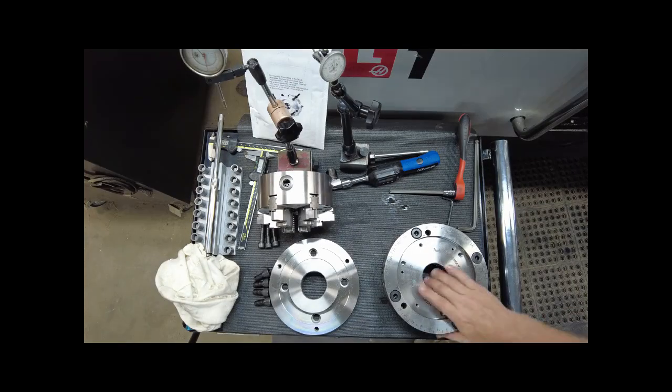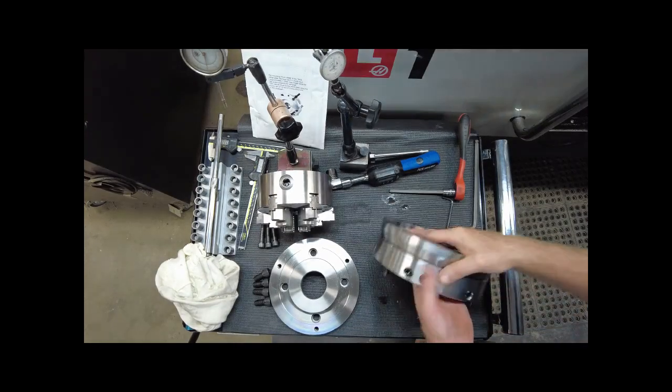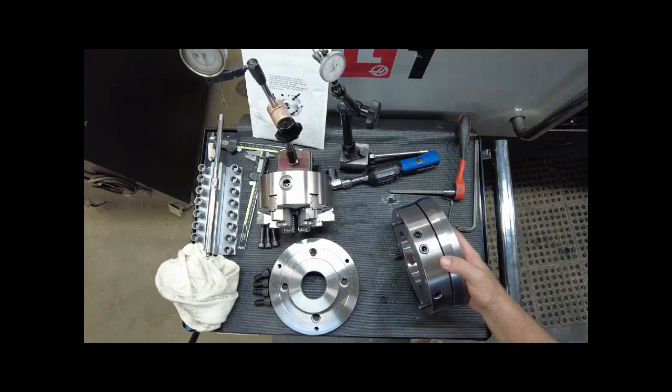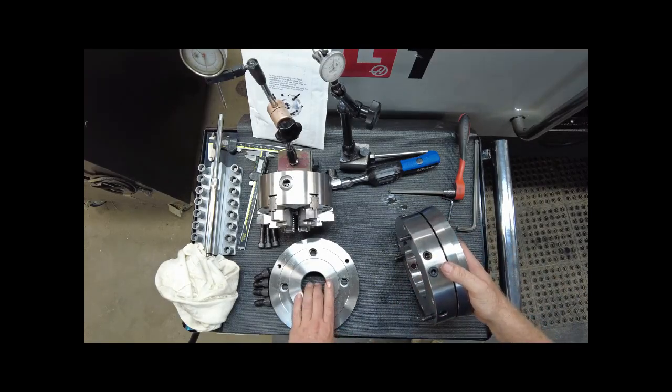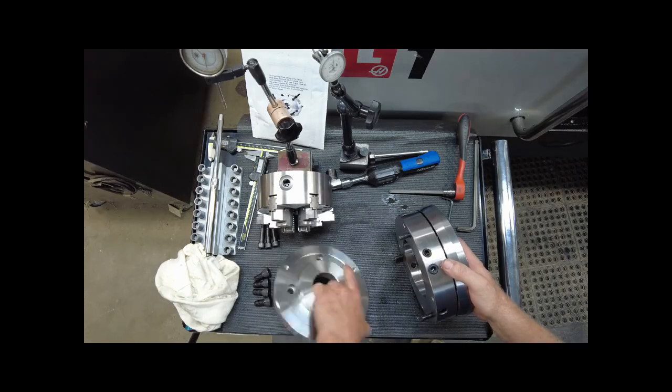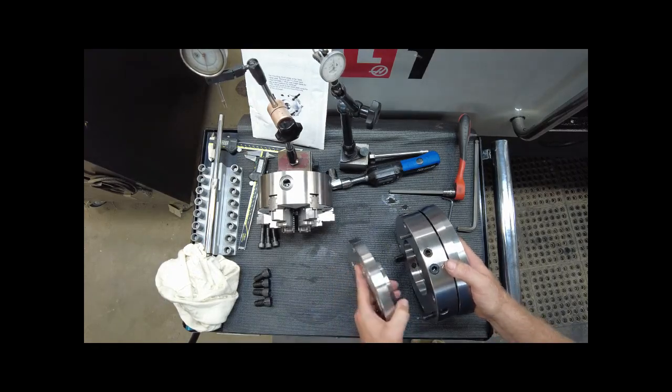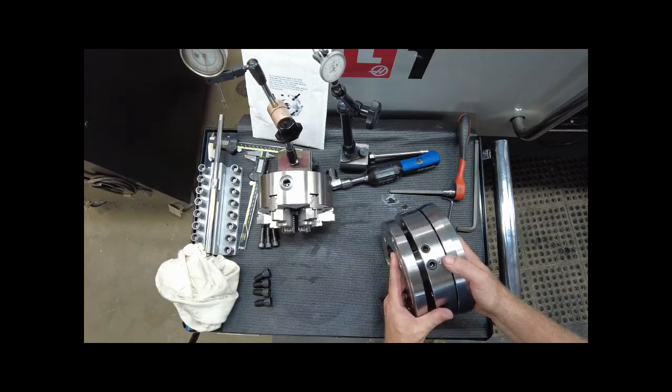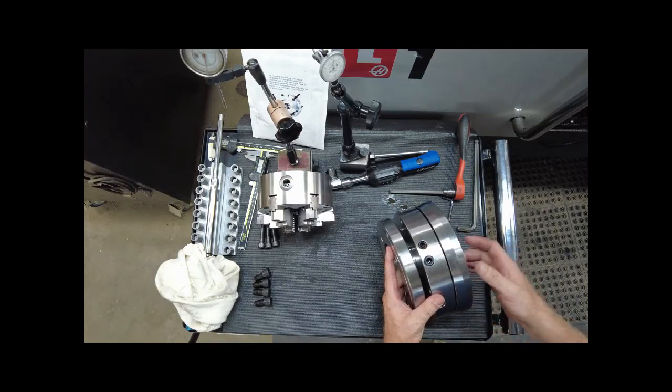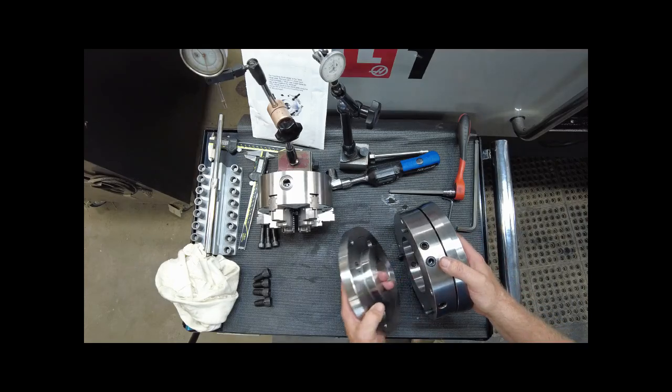Now let's go over installing the Truebore alignment system on a CNC style lathe with the A-style spindle adapter. Again the spindle adapter will come mounted to the Truebore alignment system. First remove the spindle adapter.